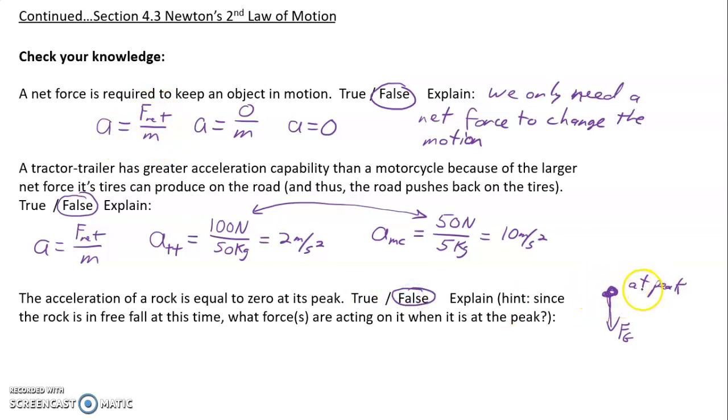We also know that the rock is accelerating a billionth of a second before the peak, the rock was going upward and a billionth of a second after the peak, the rock is going downward. So its velocity is changing. So it is accelerating at the peak. I hope you have a little bit better understanding of the second law now.